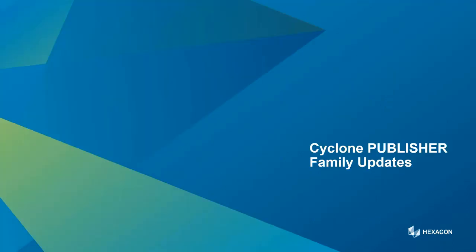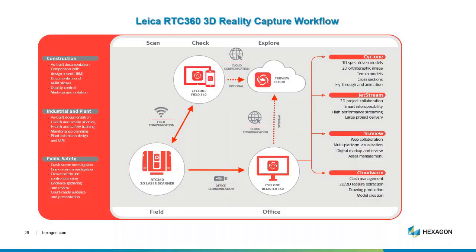This is incredibly important. Cyclone Publisher family updates. A lot of you are already pushing data out into other consuming packages. The publishing step sits, or the license resides, in Registry 360 BLK edition or Cyclone Core, and then it allows you to push data out into these other locations.